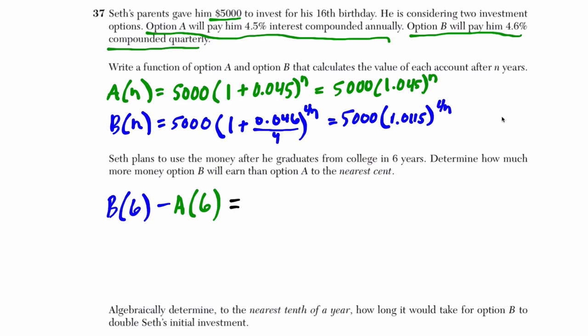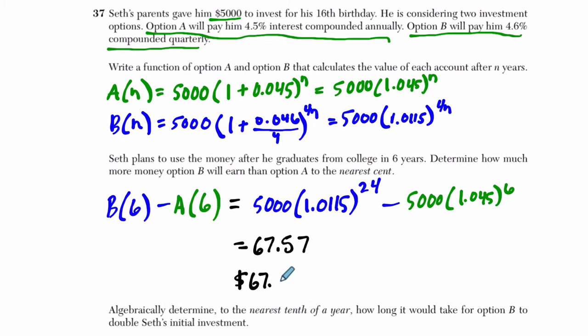But I'm going to show the work because it's the biggest question on the test. So it's really going to be 5,000 times 1.0115 to the 24th, because 4 times N is 6, 4 times 6 is 24. And then we're going to subtract 5,000 times 1.045 to the 6th. Here, even though you're going to have more with plan B, even though you have less interest, it's being compounded. Even though this number 1.0115 is smaller than 1.045, you're compounding it more times. Check your calculations. You should get 67.57, $67.57 more with option B. Especially on question 37, I really make sure I say what my answer will be.